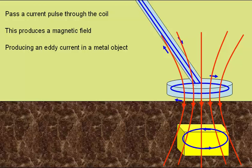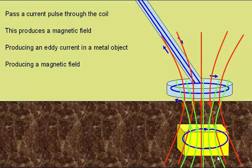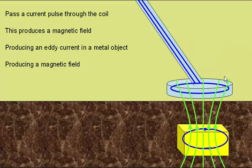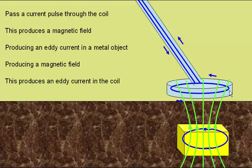This eddy current produces its own magnetic field, and when we switch off the current through the coil and lose the magnetic field produced by the coil, the coil can now have an eddy current produced within it from the magnetic field here.